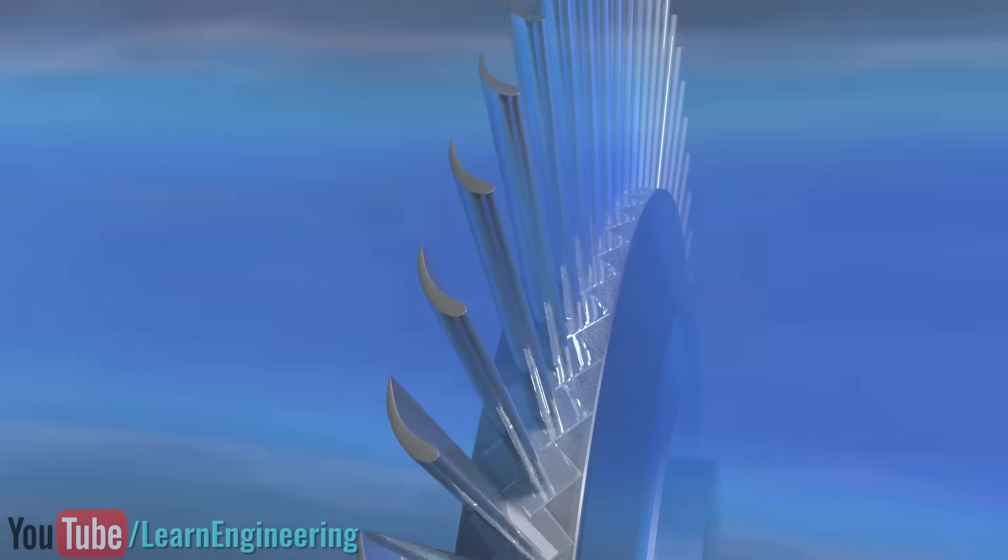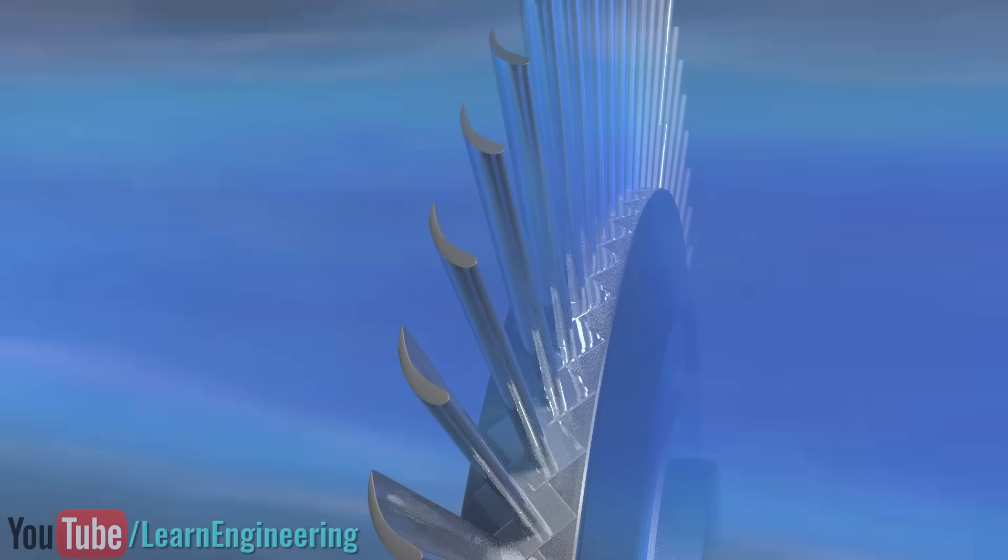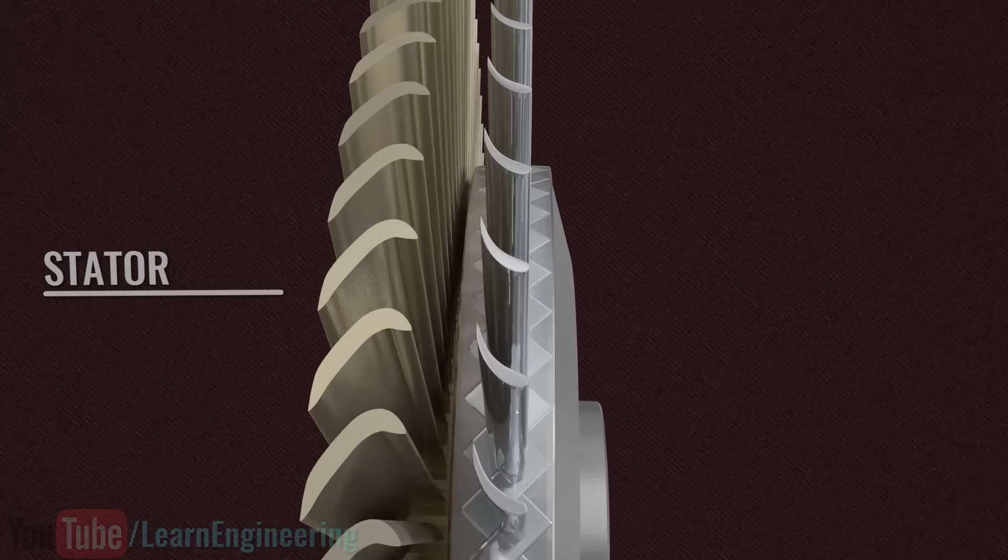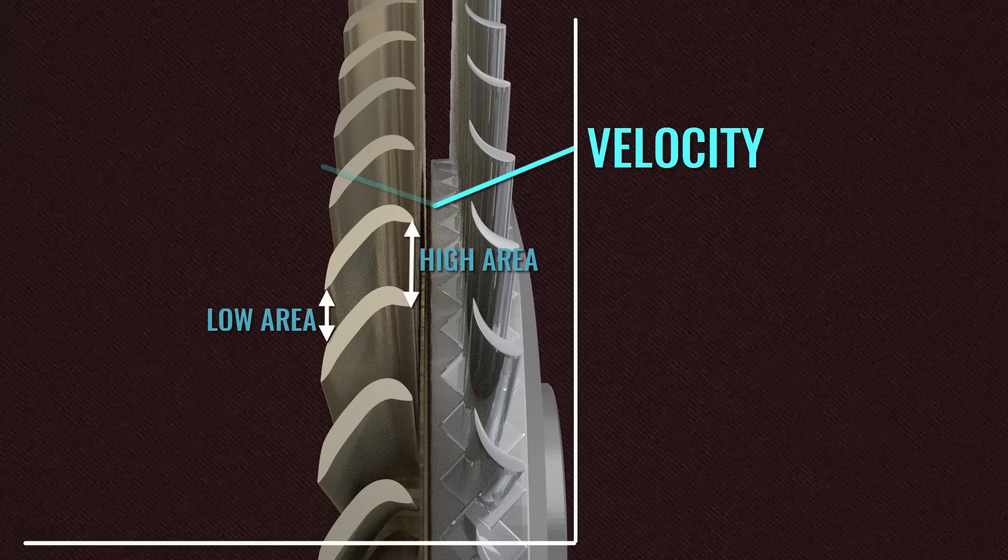The low velocity jet is of no use to produce effective lift force. To increase velocity, the fluid is passed through a stator section. The stator set is stationary and attached to the turbine casing. You can see that flow area decreases along the stator, and the speed thus increases.